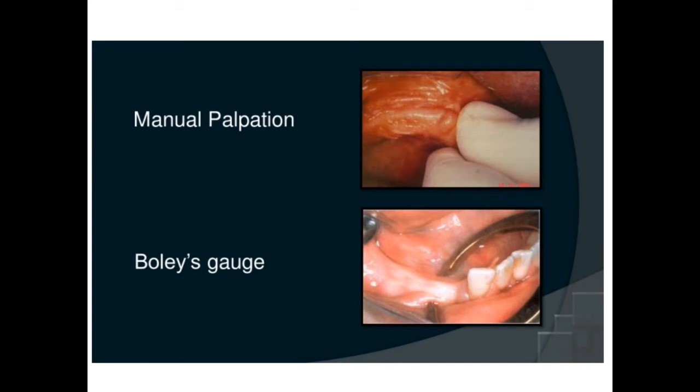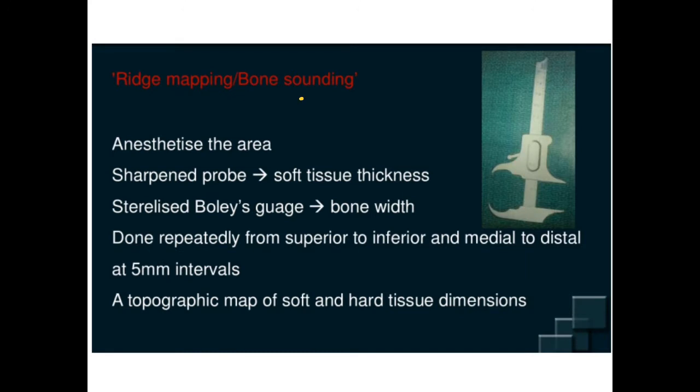When you do manual palpation, you digitally check the width of the bone. But when you are palpating, it is not only the bone — the mucoperiosteum is also included. So we use a Boyle's gauge or calipers to prick inside the tissue and check the depth. Then you can subtract the mucoperiosteum distance from the total measurement, and using pencil marks on the cast, arrive at the actual bone width.